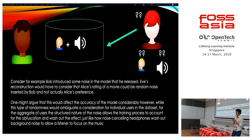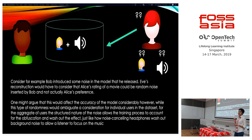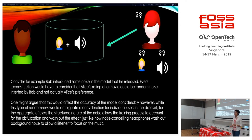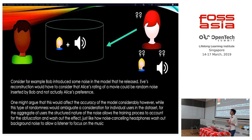Going back to Bob, Alice, and Eve — what Bob does is introduce Alice's data along with some sort of noise. When Eve tries to reconstruct, she does not know if that is Alice's actual data or if it is noise. Going back to the Netflix challenge example, Eve would not know if a particular rating is the actual rating Alice would have given or if there is some noise introduced by Bob. The subtle art of differential privacy is that you inject noise in a way that you are able to compensate for the accuracy impact.